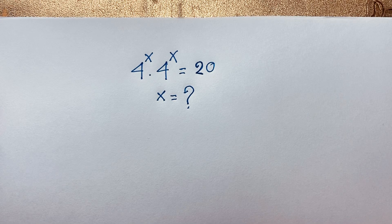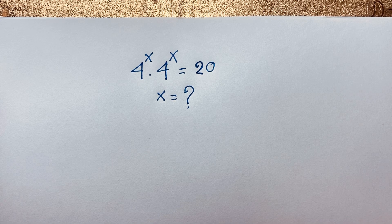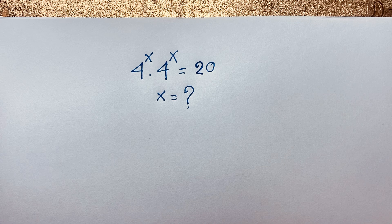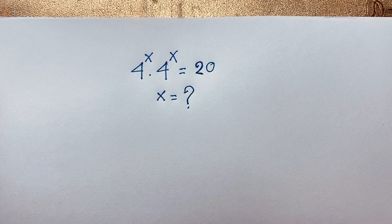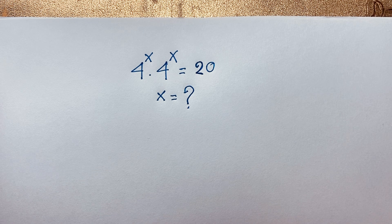Hello everyone. In this video, we have solved a nice maths question. The question is 4 to the power x times 4 to the power x is equal to 20. We have found out the value of x in this exponential expression.